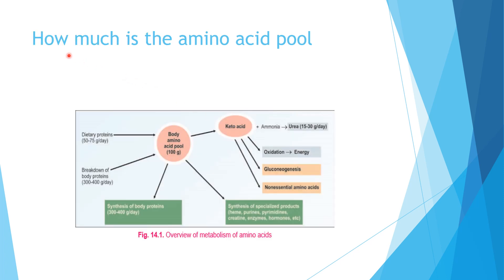The second question is how much is the amino acid pool? In a normal adult, its value is about 100 grams. This means that 100 grams of amino acid molecules are available in the blood as free amino acids that can be utilized for various metabolic processes.